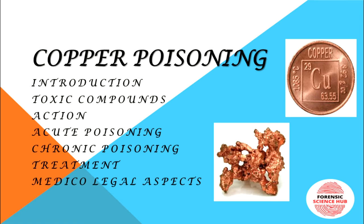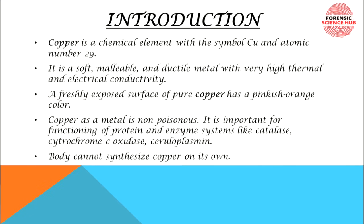Today on copper poisoning, I'll cover: introduction, toxic compounds of copper, how it acts, acute poisoning, chronic poisoning, treatment, and medico-legal aspects. Let's get started. Copper is a chemical element with symbol Cu and atomic number 29.